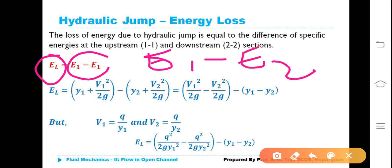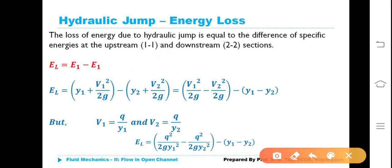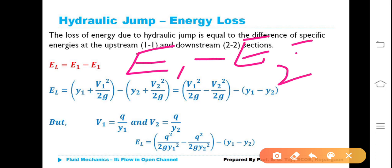Here, due to an oversight printing mistake, it reads E1 minus E1, which would become zero — that's not possible. You should think critically and correct yourself. So E1 minus E2 is the correct expression for EL, that is energy loss.